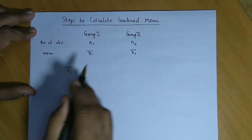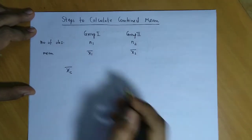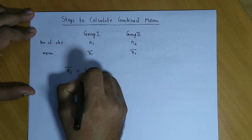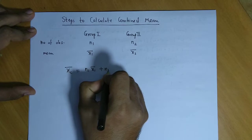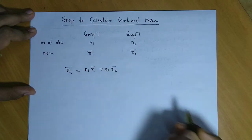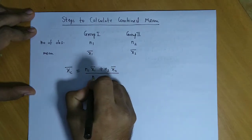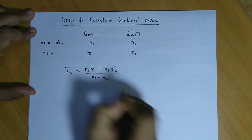...is given by n1 times x1 bar plus n2 times x2 bar, divided by n1 plus n2.